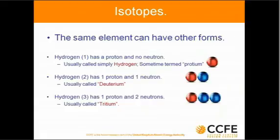Now, the same element can have two forms. The number of neutrons attached to it changes it, and it's called its isotope. So hydrogen has a proton and no neutron — normal hydrogen. If you have a glass of water, most of the water is made up of H2O. Most of the hydrogen is simple hydrogen, and if you have a physics degree and you work at CCFE, you sometimes call it proteum, but everybody in the world calls it hydrogen.